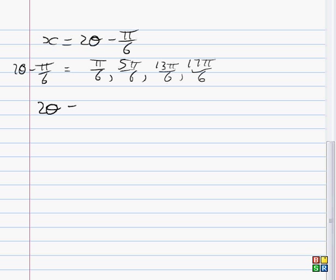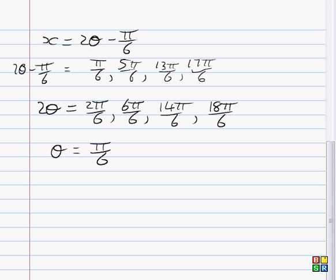So therefore adding π/6 to everything we get 2θ = 2π/6, 6π/6, 14π/6, 18π/6, and so therefore θ will equal π/6, 3π/6 which is π/2, 7π/6, and 9π/6 which is 3π/2.